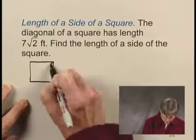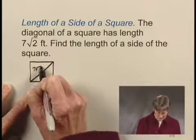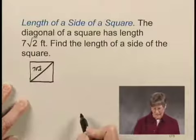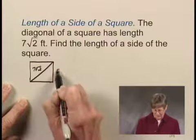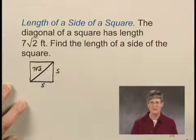And here's the diagonal of the square. And we know that this diagonal has length 7 times the square root of 2 feet. And let's call the length of a side of the square S. So we have S here and S here and 7 times the square root of 2 here.